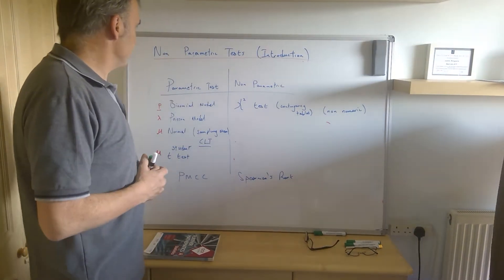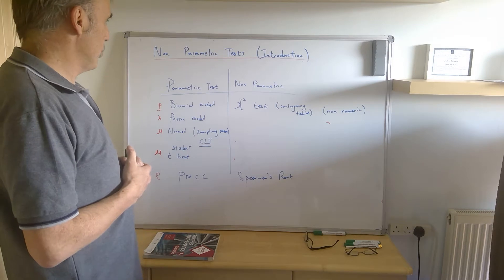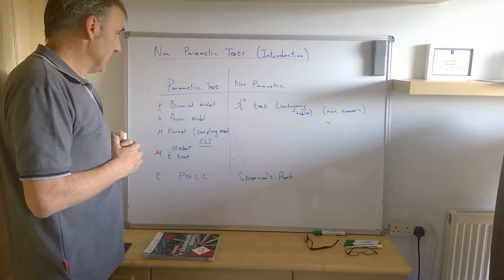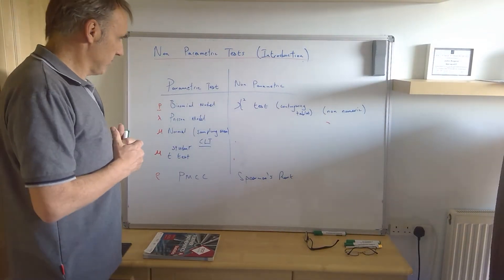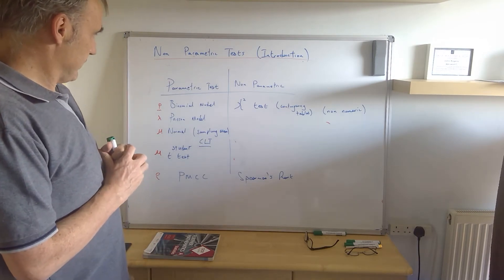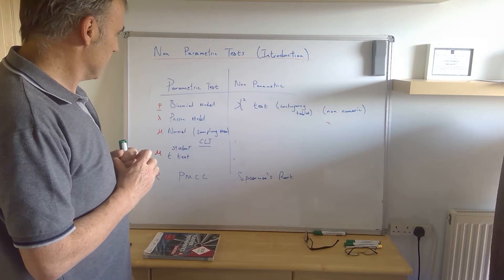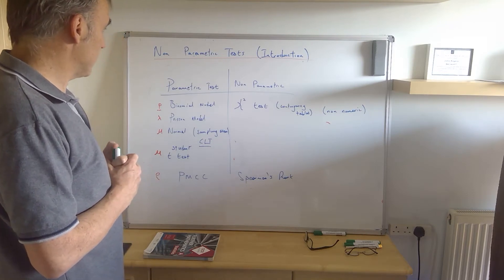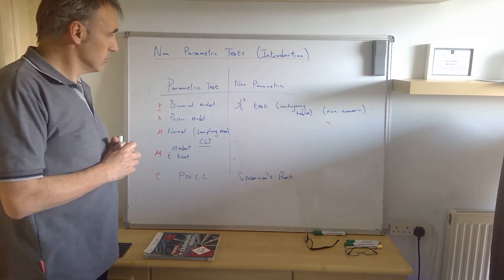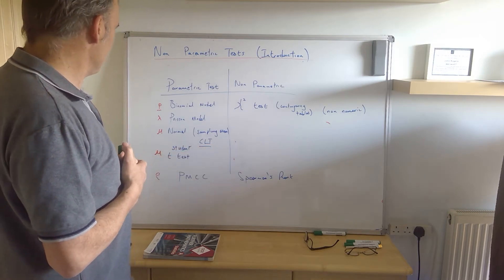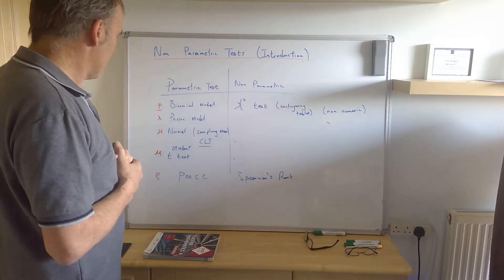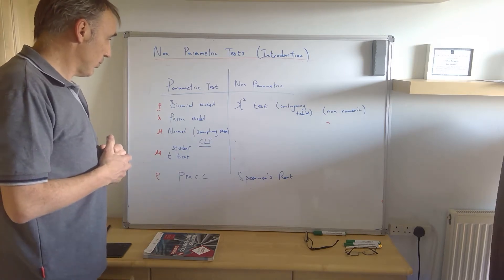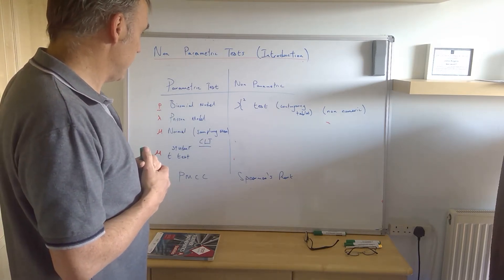This video introduces an important idea in stats about the distinction between non-parametric tests and parametric tests. The target audience is A-level maths students in the UK studying the OCR course, but it might be useful for other people. It's pre-university level, so if there's something wrong, please add to the comments. I'm not a statistician particularly, so I'm hoping it will be useful to our students studying OCR further maths.